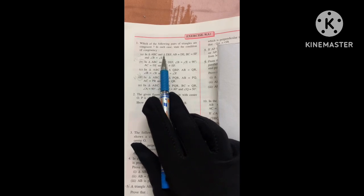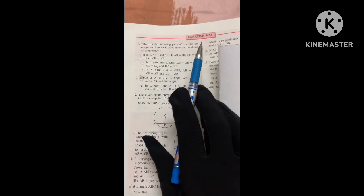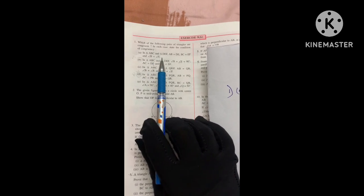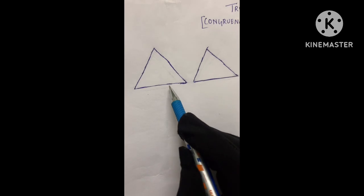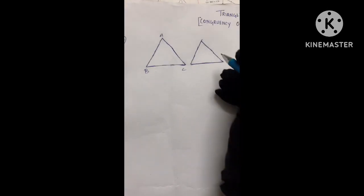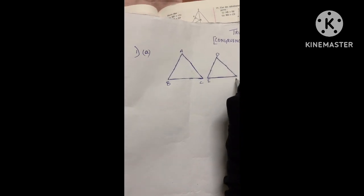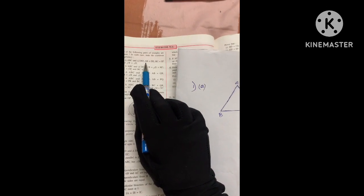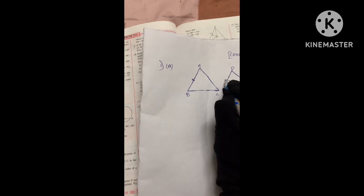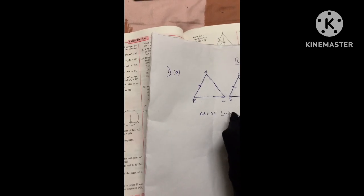Let's solve part A. In triangle ABC and triangle DEF: AB is equal to DE, BC is equal to EF, and angle B is equal to angle E. Drawing two triangles and naming them ABC and DEF — AB equals DE (one tick mark), BC equals EF (one tick mark), and angle B equals angle E. All three are given.